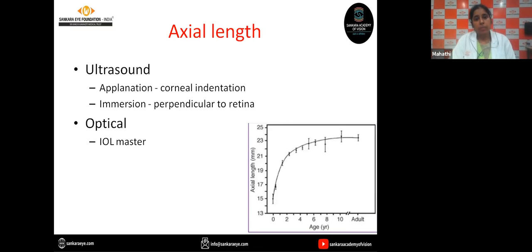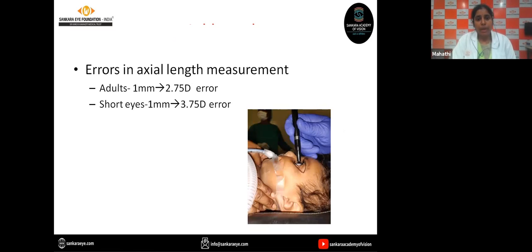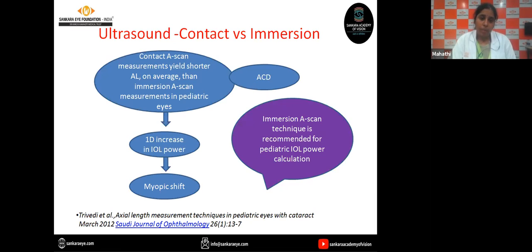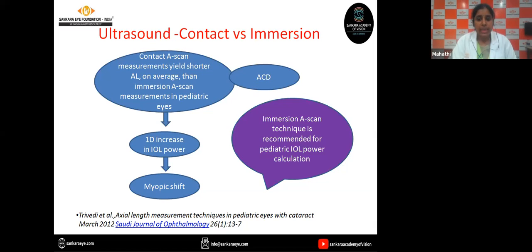Axial length can be measured by ultrasound methods or optical methods. Accurate measurement of axial length is important as a 1 mm difference in axial length in adults amounts to 2.75 diopters, whereas this 1 mm of axial length corresponds to 3.75 diopters in children as they have short eyes. Trivedi et al. compared contact versus immersion technique of A-scan measurement and found that using the contact method, there was a one diopter increase in IOL power causing a myopic shift, probably because of corneal indentation. Hence, they recommended the immersion A-scan technique as the recommended method of axial length measurement in pediatric IOL power calculation.